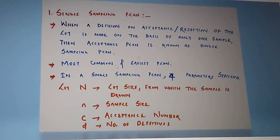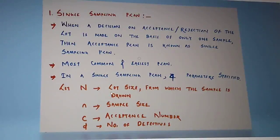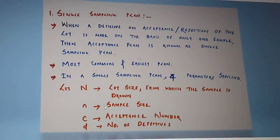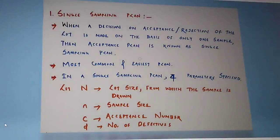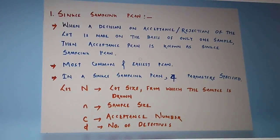For this plan, we have to consider four parameters. Capital N specifies the lot size from which the sample is drawn. Small n is the sample size to be drawn. Capital C is the acceptance number, and small d is the number of defectives found in the sample.